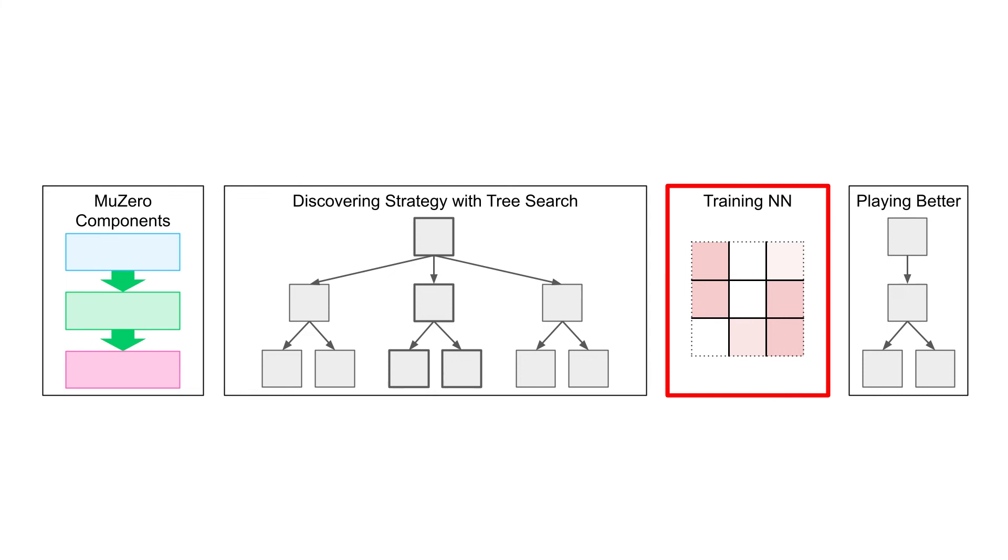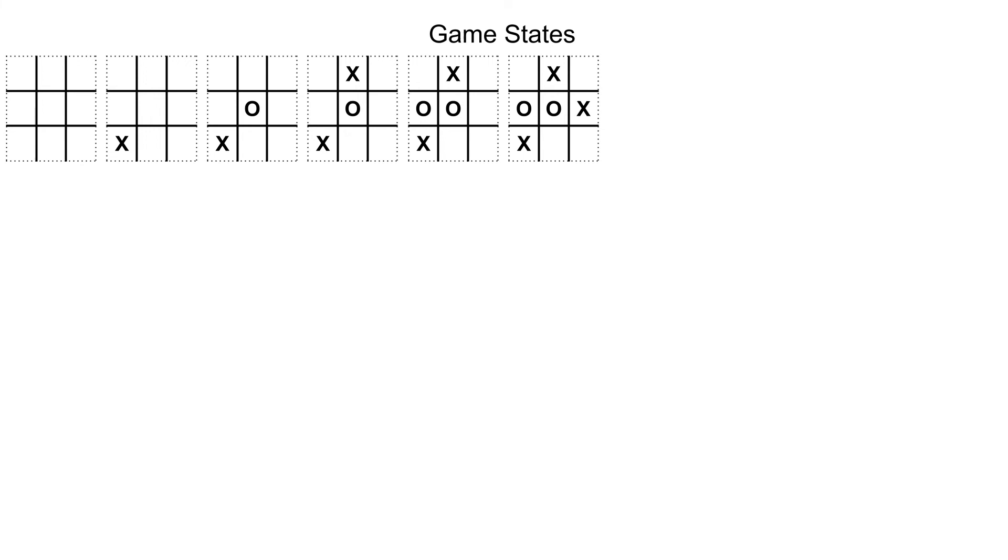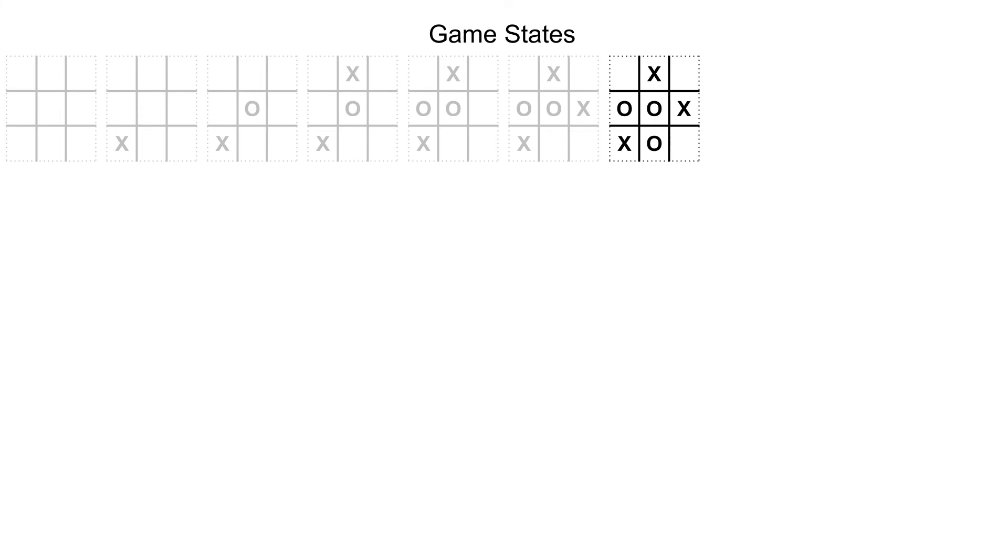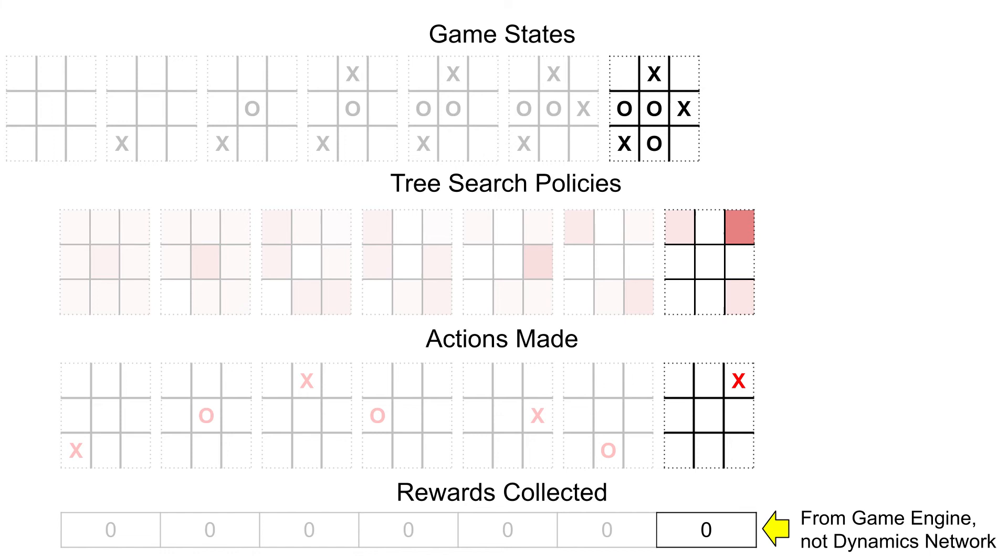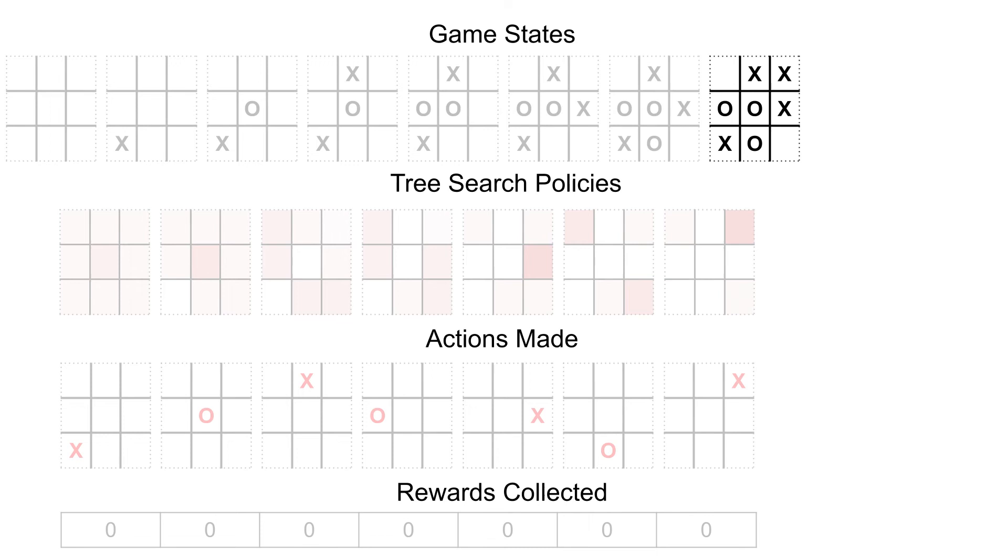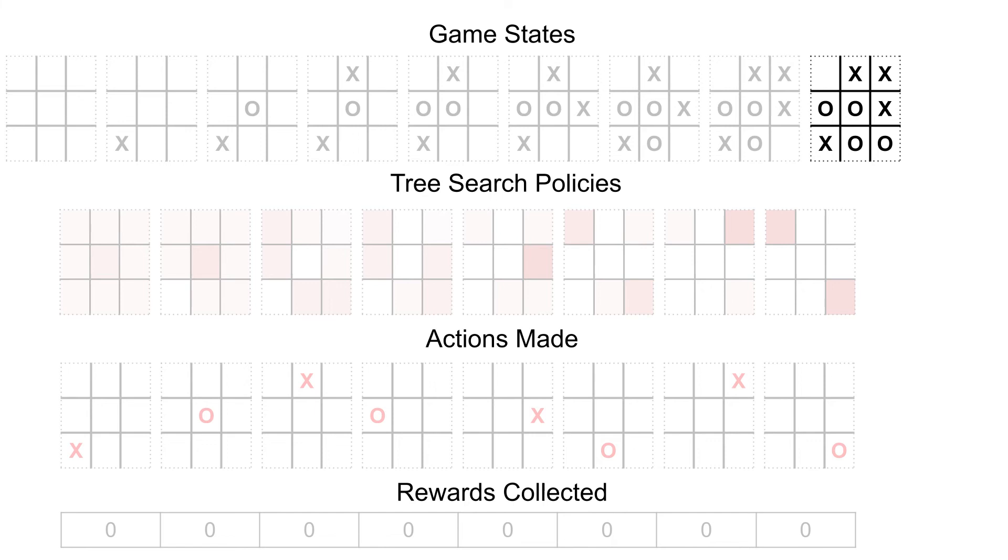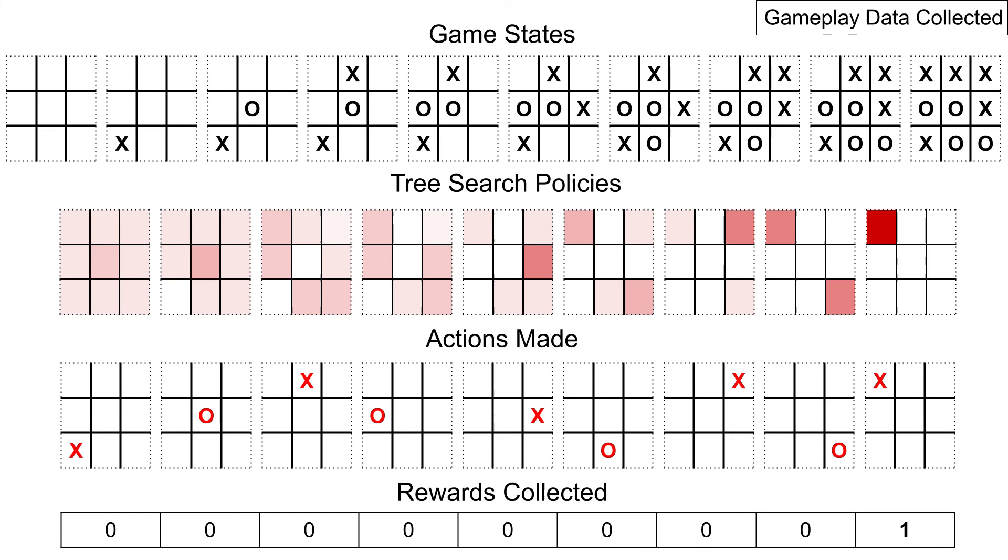Now, we will explore how to train the three neural networks so the agent can play better next time. The first step, like many machine learning problems, is to gather training data. As the agent has been playing against itself, we collect all the game states. For example, after analyzing the board state from before, we add the state to our list of game states, as well as the policy we computed after tree search, the action the agent selected, and the reward that the game engine awarded for making the action. Note that during tree search we used the estimated rewards, but after making the action we record the actual reward from the source of truth, the game engine. We keep collecting this data as the game plays out, either until some player wins, or the game ends in a draw. This game will eventually end in a win, so the reward for the final action is 1. This is all the gameplay data collected, but we need to process it a bit before training begins.